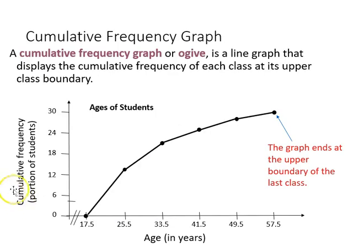The cumulative frequency graph should always look like this, where it approaches a limit, which is the total number in the sample that we're examining.